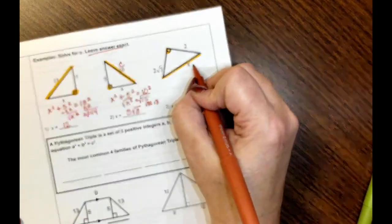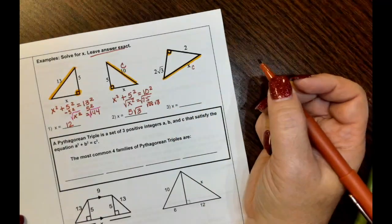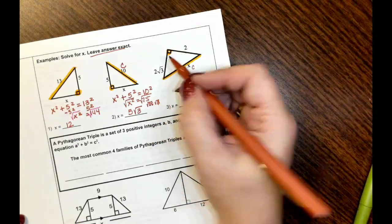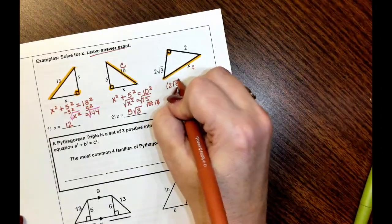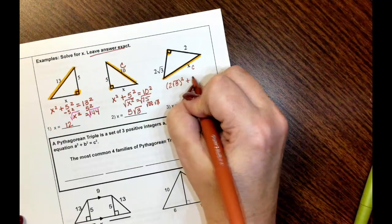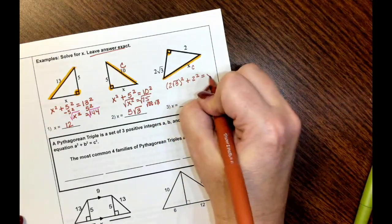This last one, be careful, X is now your hypotenuse. So we're going to square these two sides. It doesn't matter which one's which, be careful here. It's 2 square root of 3 squared plus 2 squared is equal to x squared.